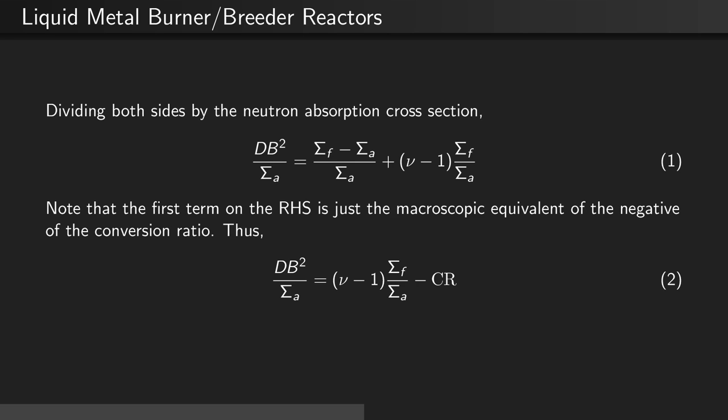Therefore, D B-squared over Σa equals (nu minus 1) times the ratio of the fission cross-section to the absorption cross-section minus the conversion ratio.